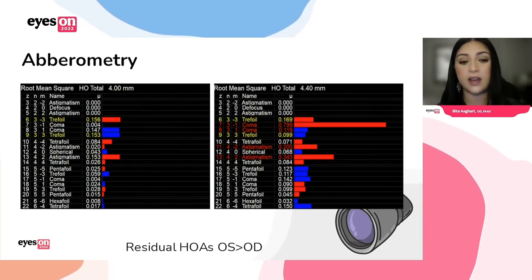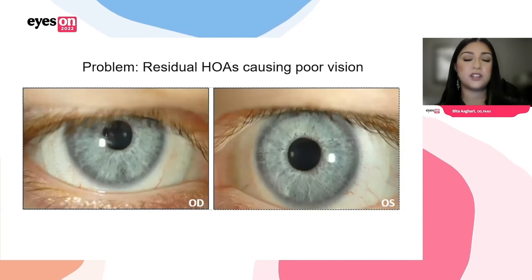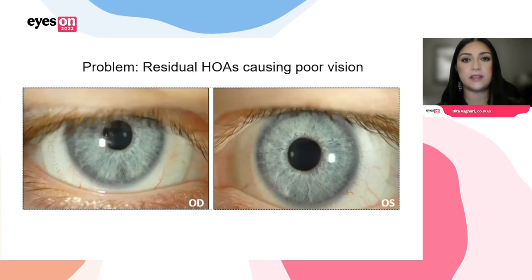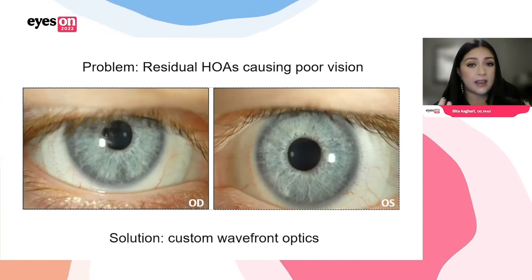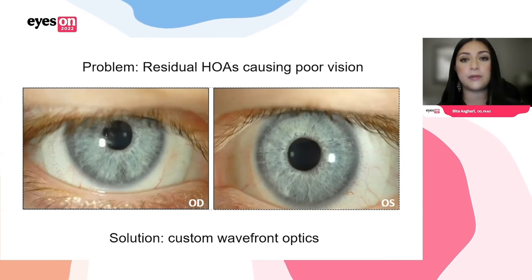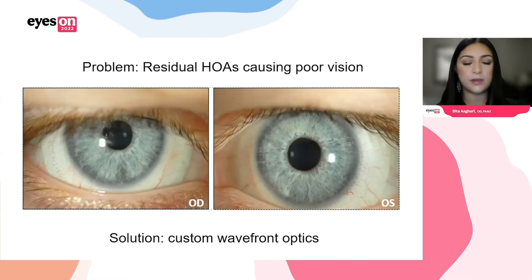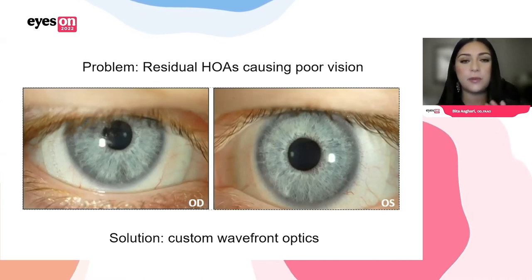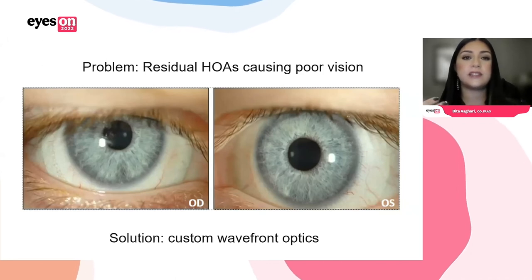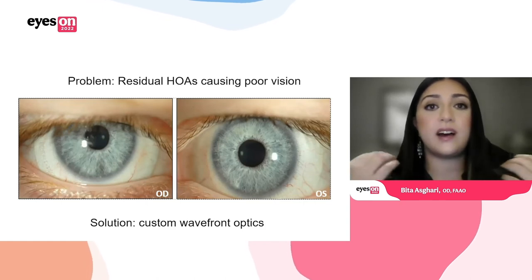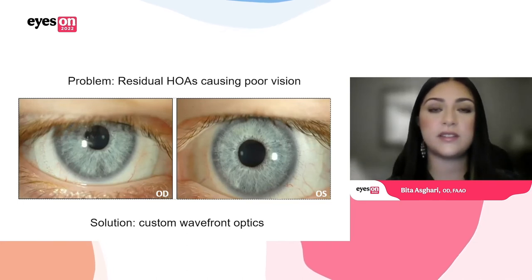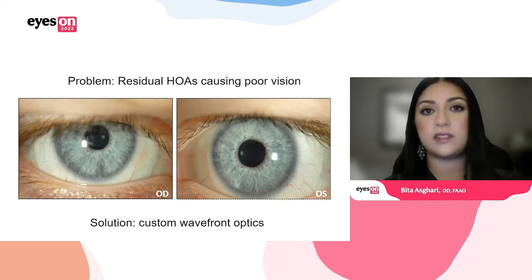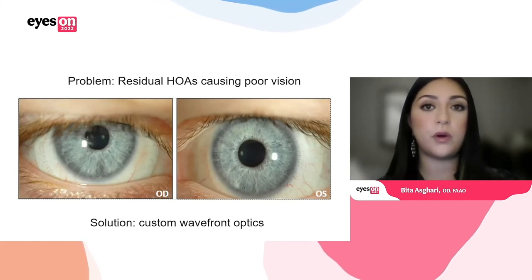You could do custom wavefront optics to correct for higher order aberrations. This is a meaty topic — I could go three hours just talking about aberrations alone. Just for the sake of completeness, know that there are other options available, and you may be able to exhaust alternatives and elevate your fitting technology. The capability that you may have may change with a different lab you're using — that may prevent your patients from going to the surgical approach.